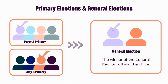In New York City, some political offices we can vote for are the mayor, city comptroller, public advocate, borough president, and city council members. The winner of the general election will be the one who gets the job and represents all of us, regardless of which party we are in.